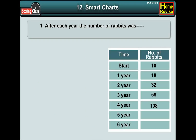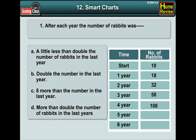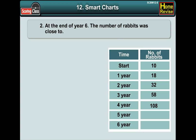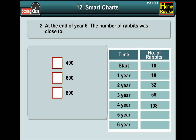Question number 1: After each year, the number of rabbits were — A: a little less than double the number of rabbits in the last year; B: double the number in the last year; C: eight more than the number in the last year; D: more than double the number of rabbits in the last year. The answer is A. Question number 2: At the end of year 6, the number of rabbits was close to 400, 600, or 800? The answer is 400.